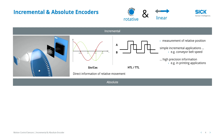Measurements of relative positions are used in either simpler incremental encoder applications, such as conveyor speeds, for example, or high-end precision applications, for example, a printing application.